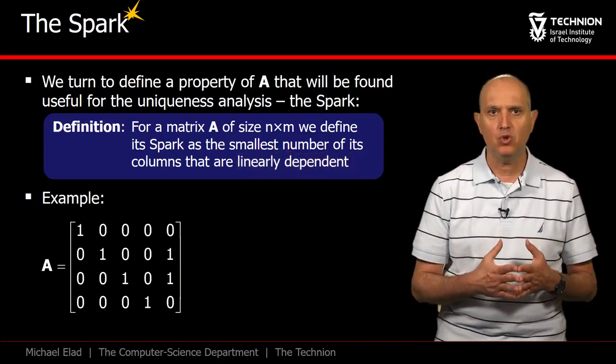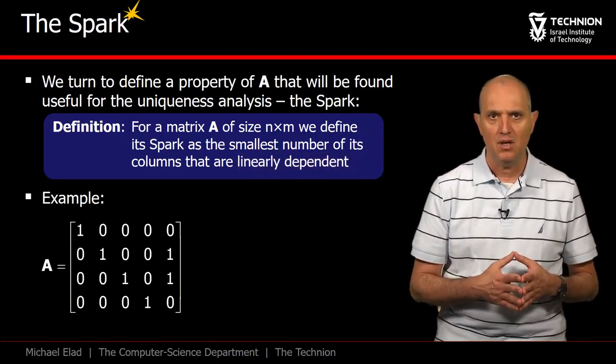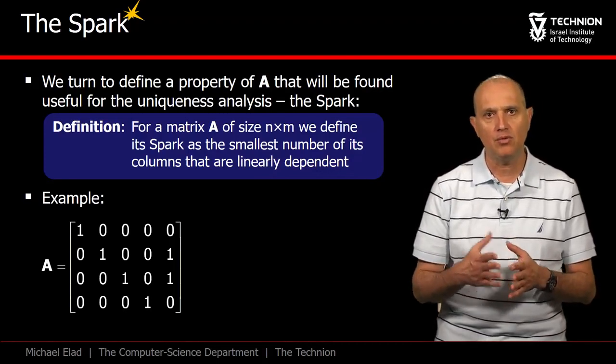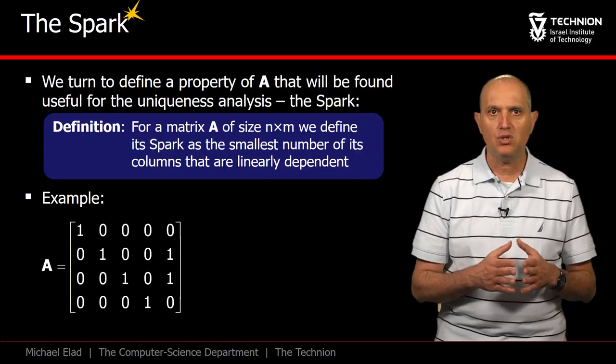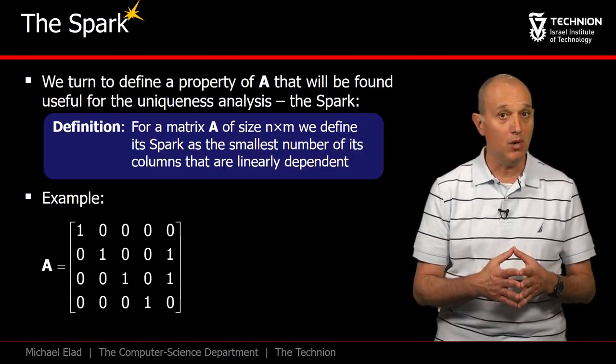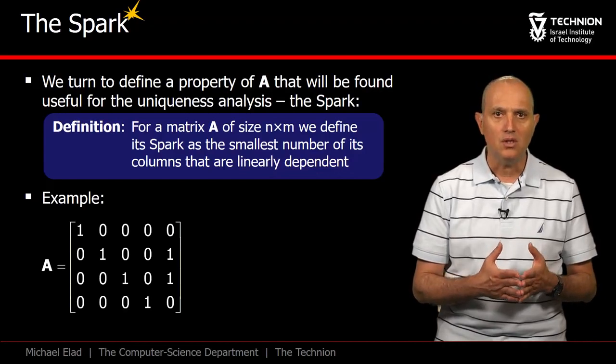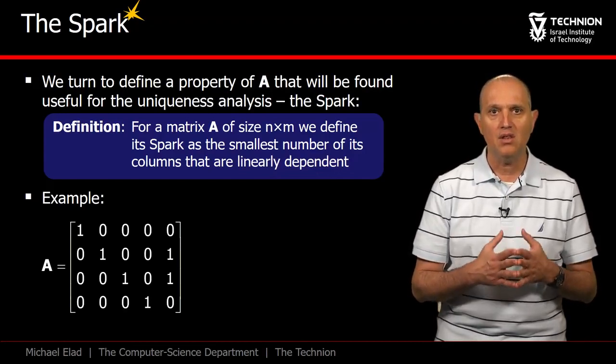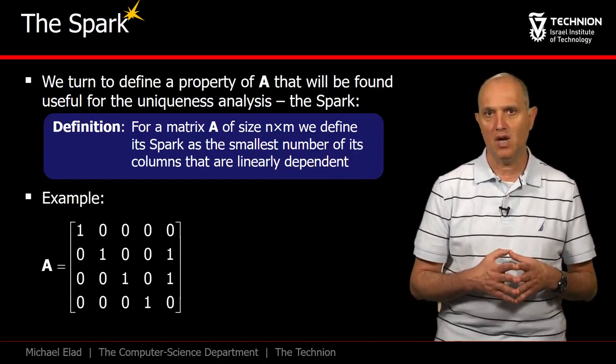Let's look at an example to better understand this definition. This matrix is the identity 4x4 matrix, augmented with another column to the right. We are searching the smallest possible set of columns that are linearly dependent. Could it be one? The answer is no, since there is no single column that is linearly dependent. Only the zero column would have satisfied this requirement.